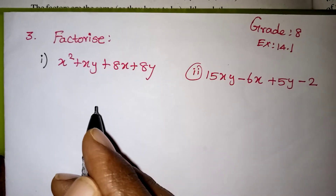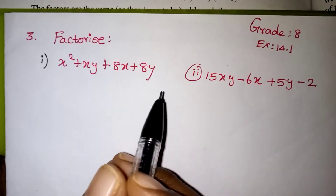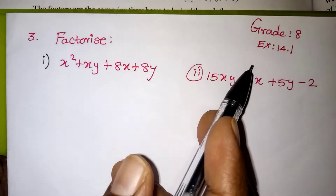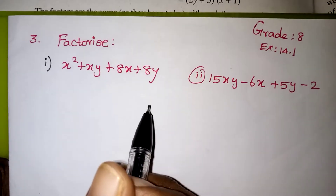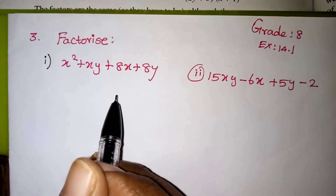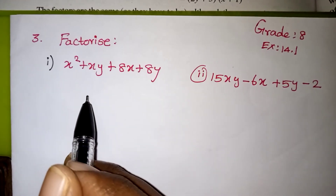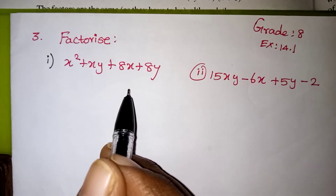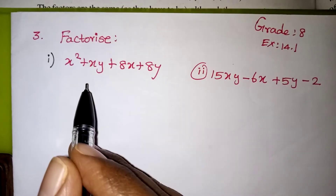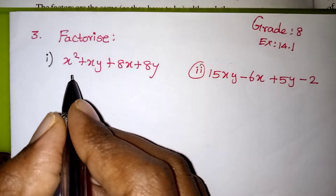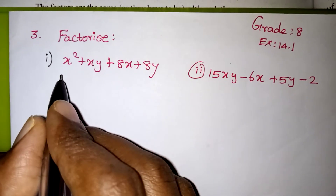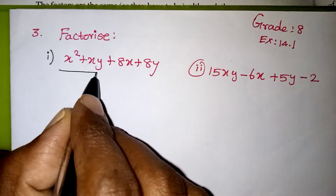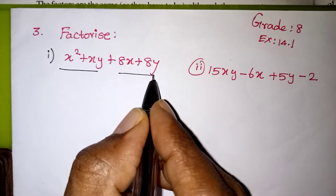Hi students, in this video we are going to learn Exercise 14.1, Question 3 — Factorize. Our first problem is x² + xy + 8x + 8y. There are 4 terms given in the question, so we can pair the terms: first two terms as one pair and last two terms as another pair.